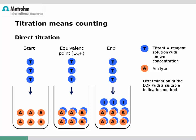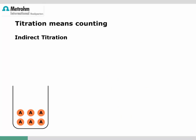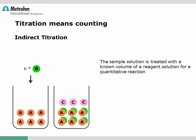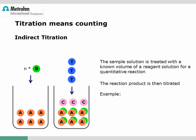Not for every analyte can a direct titration method be used — for example, if no suitable sensor is available. In this case, a so-called indirect titration method is used. For an indirect titration, a known amount of reagent solution is added to the sample solution. This reagent reacts with the analyte and a new species is formed, and by titrating this new species we can calculate the original amount of the analyte in the sample.